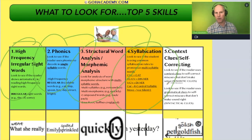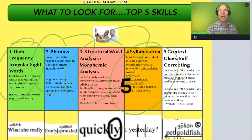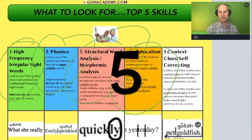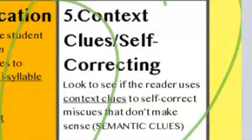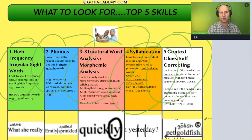Number four: syllabication — this is what a student uses to break up a multi-syllable word like 'wonderful' or 'diner.' It's a little more advanced, but watch out for it because it's often in the essays. Number five: the use of, or lack of, context clues. Little hint, team — using context clues is one of the most common strengths.